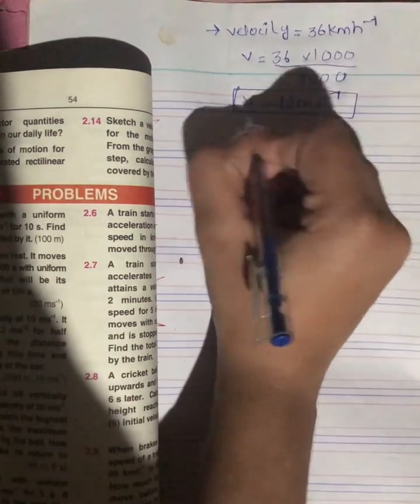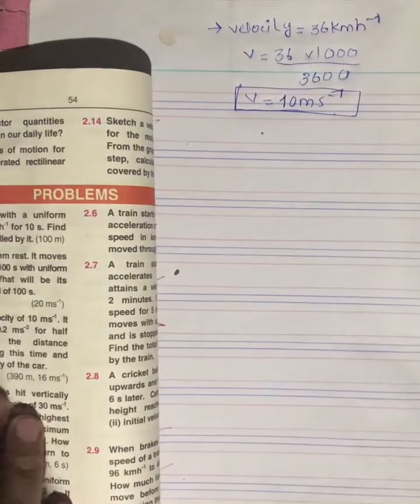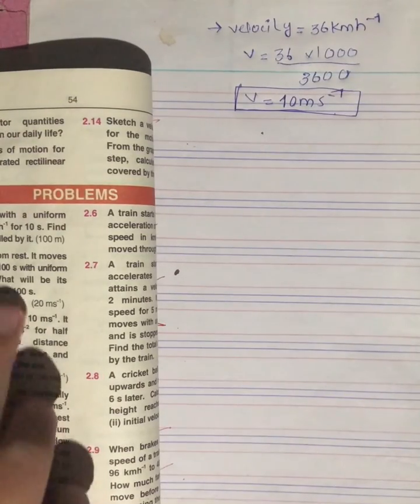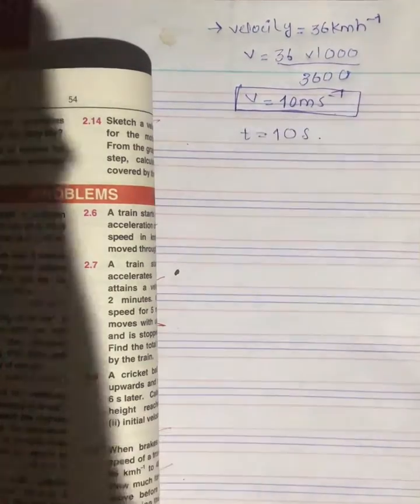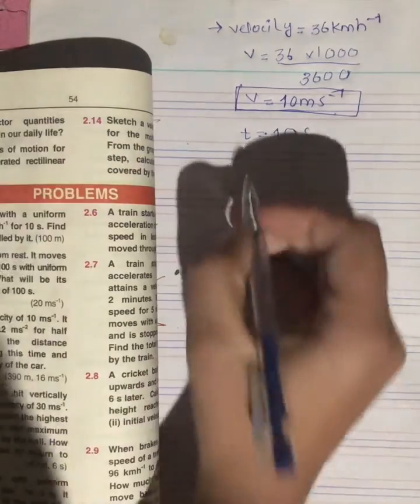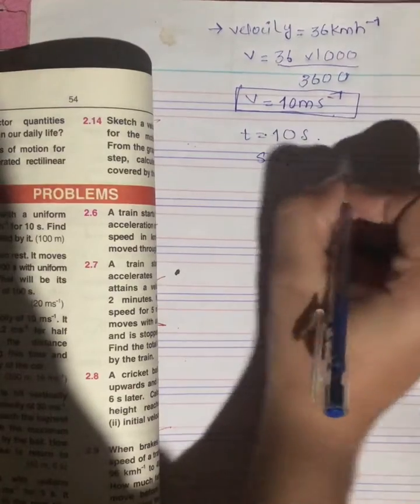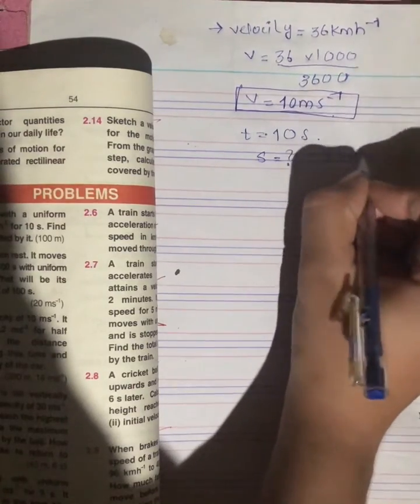And then we find what we have to do in the question. Time is given: t is equal to 10 seconds. So we have to find distance s, and s is equal to vt.